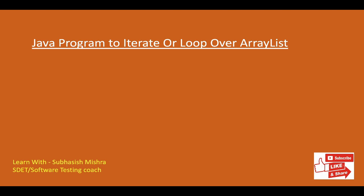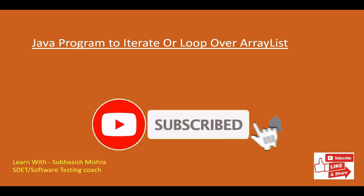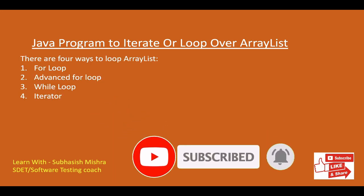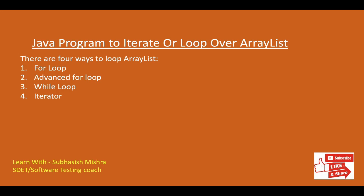Hey guys, this is Subhash, your tech coach. Today we will learn how to iterate a loop over ArrayList in Java. There are four different ways we can do it: one is for loop, second one is advanced for loop, then while loop, then iterator. We will write a program and we will see how to loop over ArrayList in four different ways.